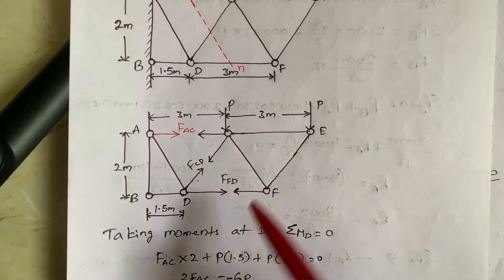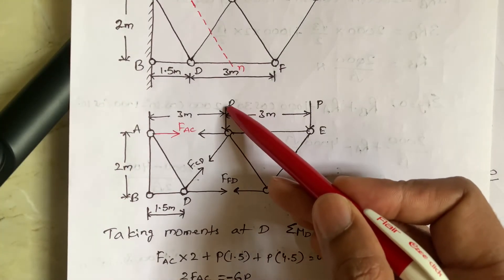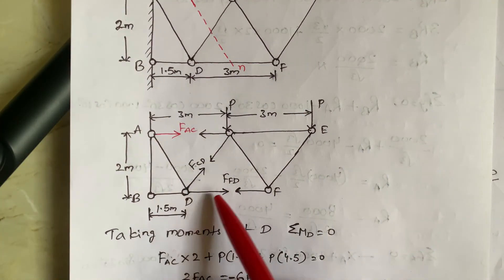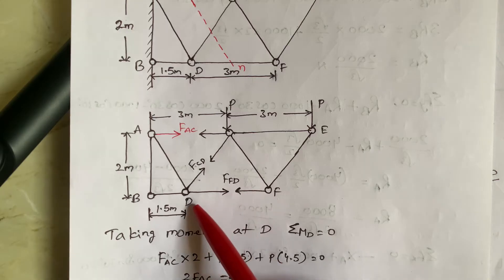And next, this P force. So P into this distance is from this point to this point, it is 1.5. Why?